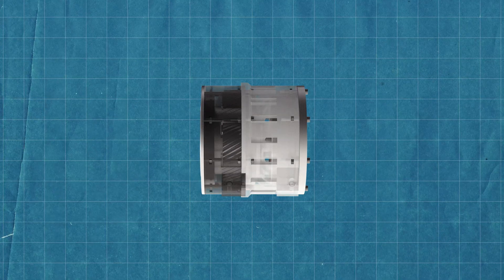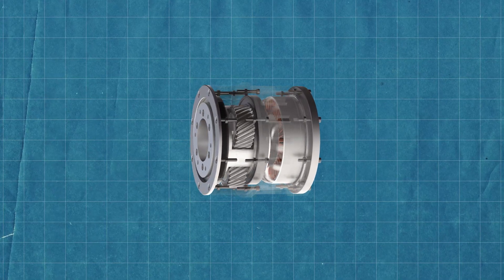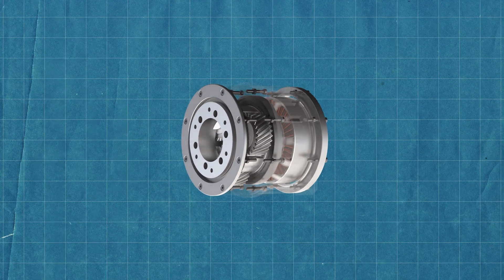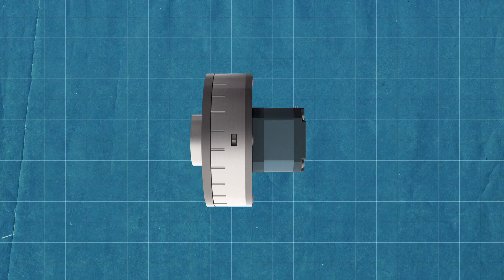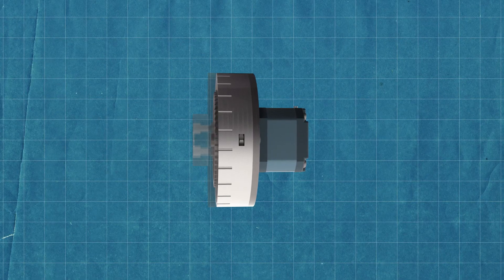Most actuators you've seen probably follow a simple setup. A motor directly connected to a reduction gear. It's straightforward and easy to control. But the downside? It's not space efficient.